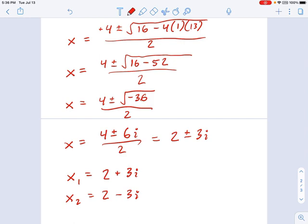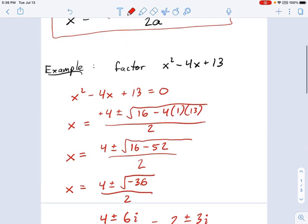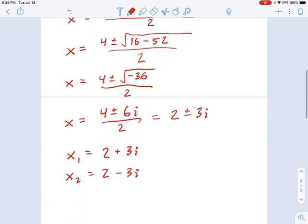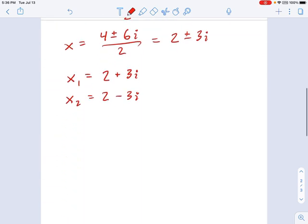Now, these are solutions. This isn't factoring. Remember what we wanted. We wanted this thing factored. So, keep this in mind. You can always write solutions in this form: x minus x1, x minus x2 equals 0.